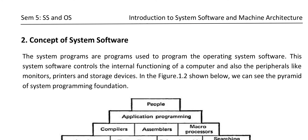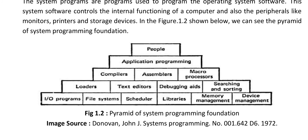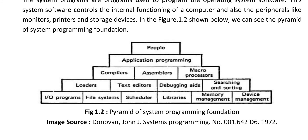Moving on to the concept of system software, system programs are used to program the operating system software. System software controls the internal functioning of a computer and also its peripherals like monitors, printers, and storage devices. In figure 1.2, we can see the pyramid of system programming foundation. At the topmost level are users who interact with application programs, which internally interact with system softwares like compilers, assemblers, macroprocessors, loaders, and text editors, which in turn make use of input-output programs, file systems, schedulers, libraries, memory management, and device management features.